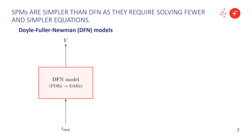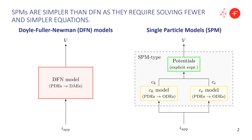The key aspect of single particle models — and there are many instances of this type of model, so here referred to as SPM-type — is that they break this block into two steps. The first one takes the input current and calculates from it the concentrations in the electrode particles and the electrolyte. This still involves solving partial differential equations, but they are much simpler, and when we discretize them they become ordinary differential equations, which we know how to solve very efficiently numerically. Then anything else we want to know, such as the voltage, potentials, currents, or any other variable of interest, can be calculated from explicit expressions, which are very fast to evaluate.